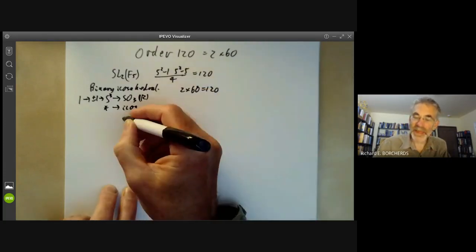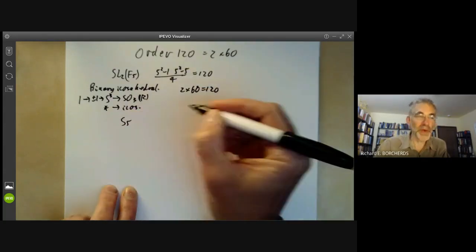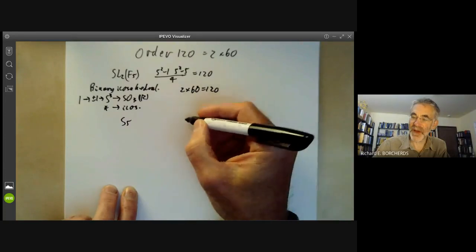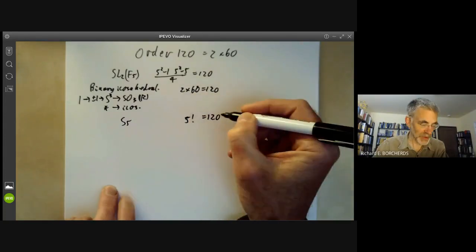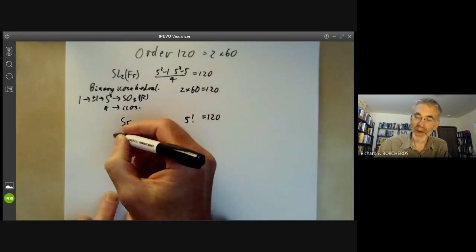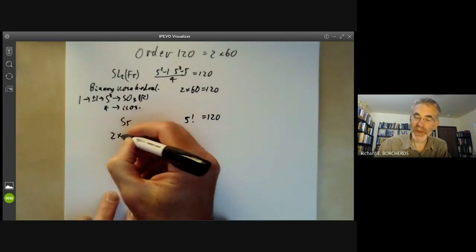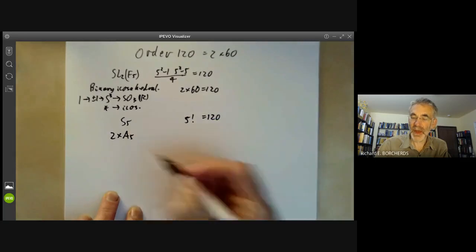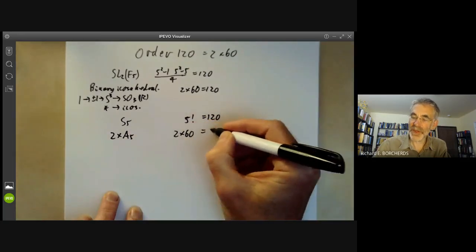Thirdly we've got the group S5 of all permutations of five objects and this is order 5 factorial which is equal to 120. And another obvious thing we can do is we can just take 2 times the alternating group A5 which is order 2 times 60 which is also 120.